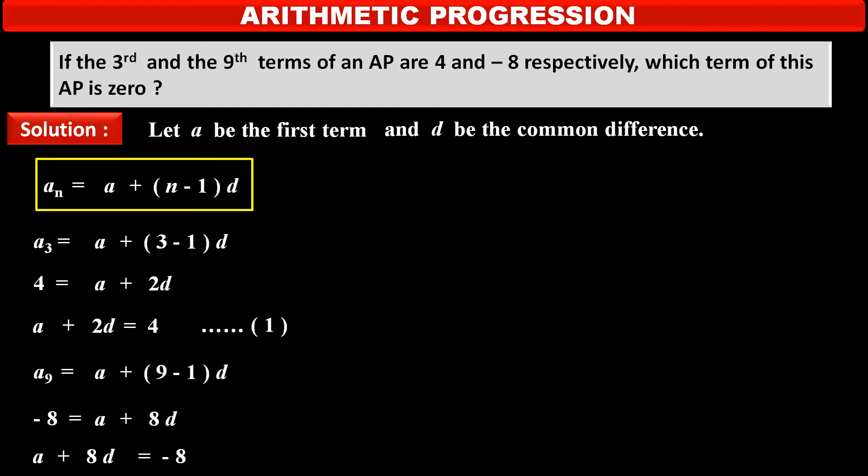So, again, we get the equation of same two variables A and D as A plus 8D is equal to minus 8. Consider this as statement number 2.